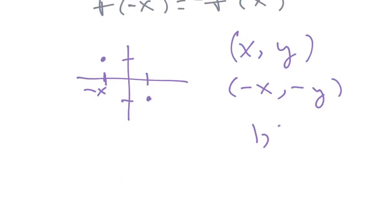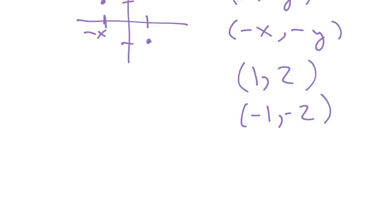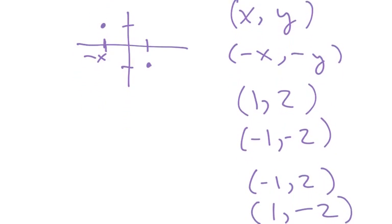This is to say, like, if I have a point (1, 2), then the next following point would be (-1, -2). Or if I had the point (-1, 2), then it would become (1, -2).